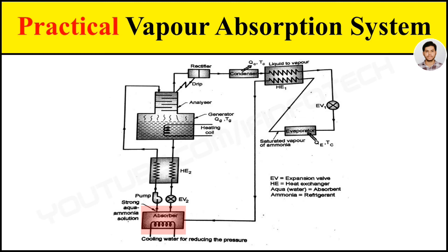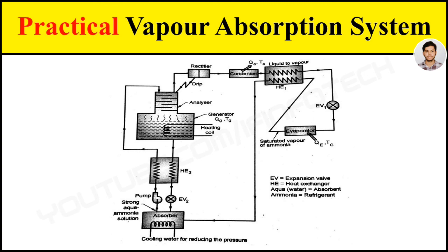This strong aqua ammonia solution is pumped to the generator through the heat exchanger. The function of this heat exchanger is to provide cooling of the weak solution and heating of the strong solution. This operation saves the amount of cooling needed for the absorber and the amount of heat needed for the generator.